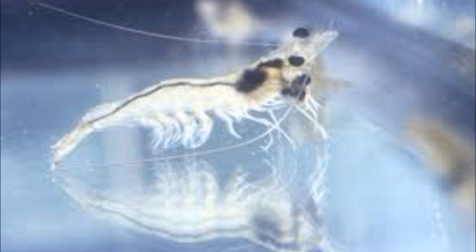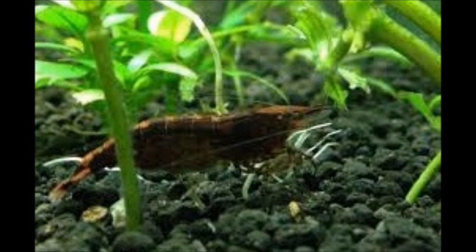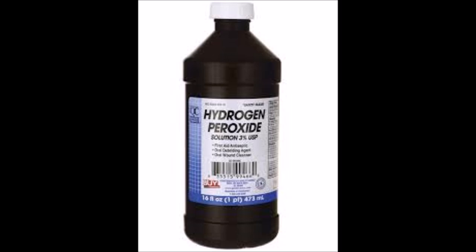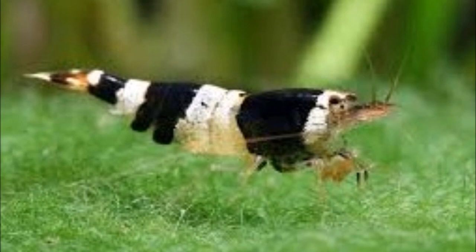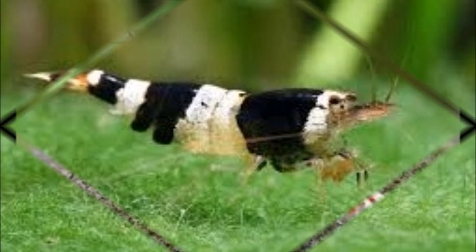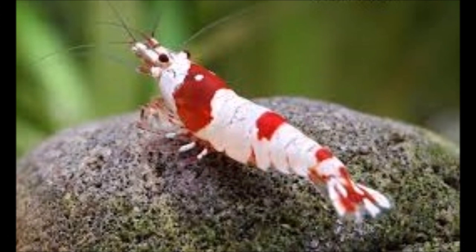Treatment is not yet fully established, but suggested symptomatic treatments are as follows: Treatment one — large water changes, 80% daily. Treatment two — hydrogen peroxide (H2O2) 3%, dosage 1 ml per 4 liters, up to 2 ml per 4 liters if the situation is drastic. Duration: once per day for five days.